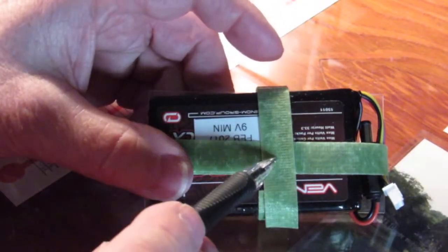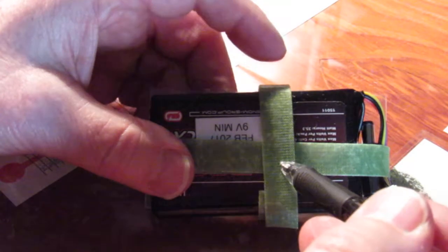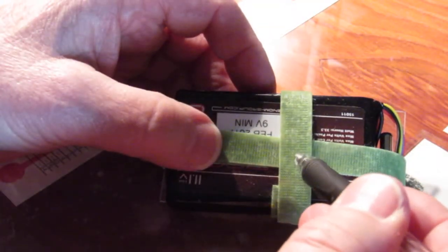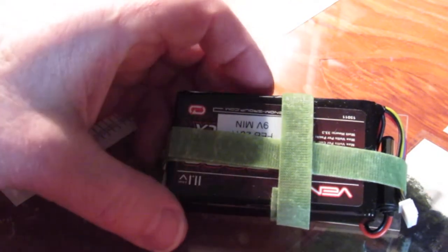See it? Now you only have one layer here, one layer here, and on the bottom one layer. So now we only have three thicknesses thick. Before it was just too thick.